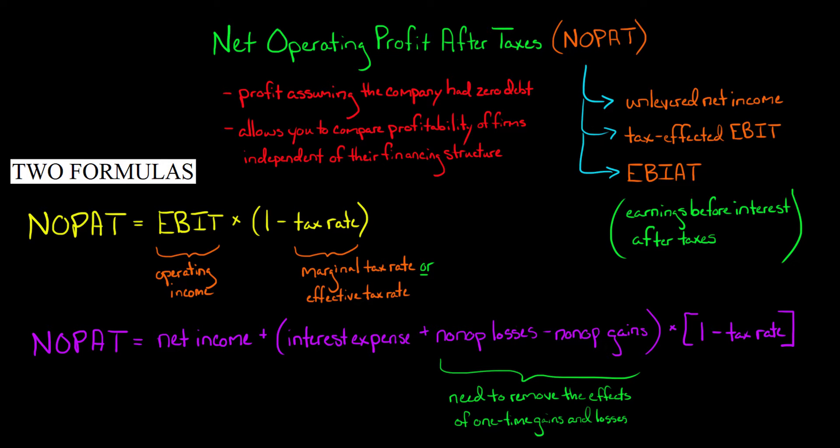In this video, I'm going to show you how to calculate a company's net operating profit after taxes, which is commonly known as NOPAT. NOPAT is a company's profit assuming the firm had zero debt. It's also known as unlevered net income, tax-affected earnings before interest and taxes, or earnings before interest after taxes. Note that EBIAT and NOPAT are the same thing.